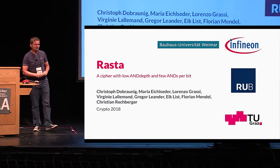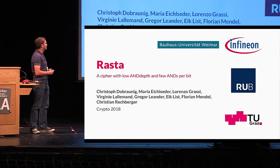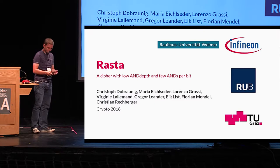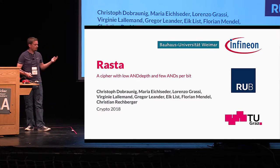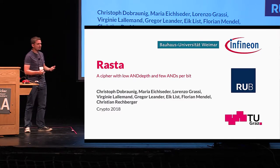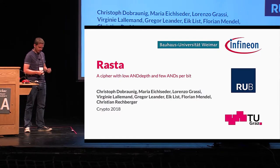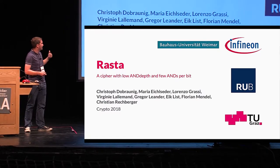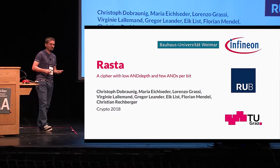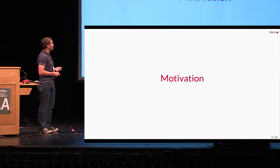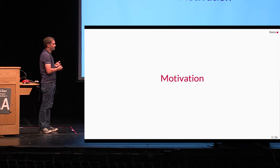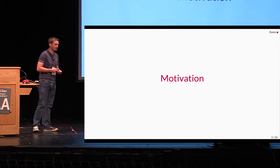Hello. Thanks for the nice introduction. Now we have a completely different talk. It's about primitive design, so there are no proofs in there to loosen the thing up. This talk is about a stream cipher called Rasta, which has a low ANDdepth and few ANDs per bit at the same time. So, first of all, a bit of motivation. Why do we want to design such a specific construction?